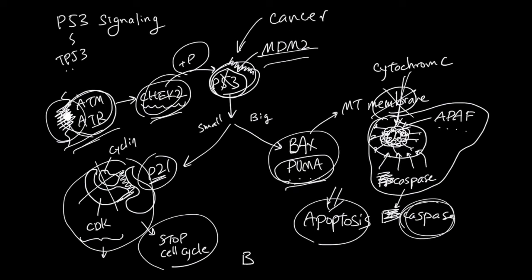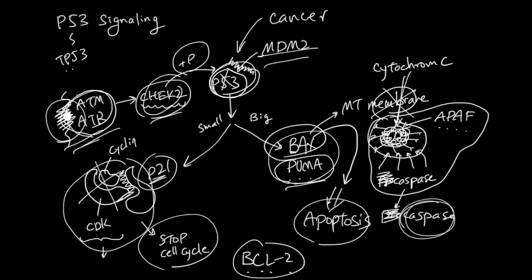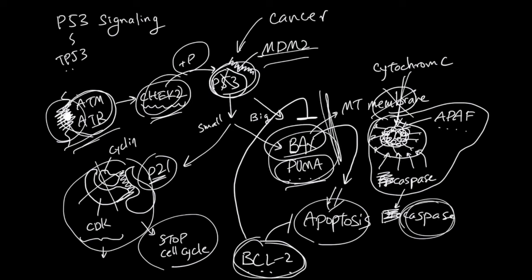There is another player I want to talk about, which is BCL-2 — B-cell lymphoma 2. BCL-2 and Bax are from the same family, but they do opposite things. Bax causes apoptosis, but BCL-2 does not want to cause apoptosis. The way BCL-2 works is that it goes and blocks the Bax protein from working. So even if there is a signal, activated BCL-2 can halt that signal.